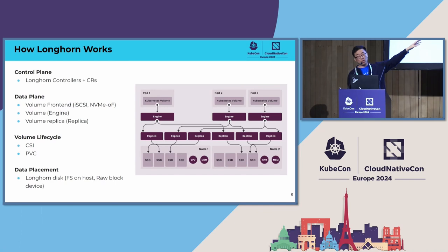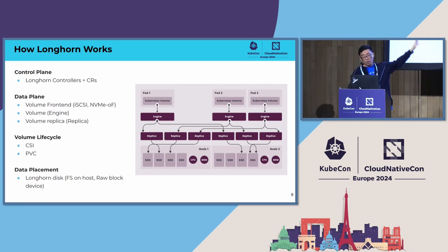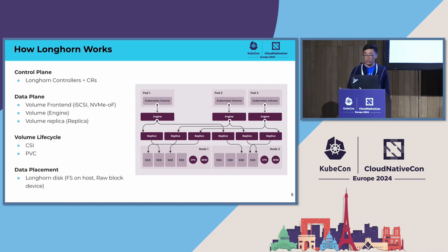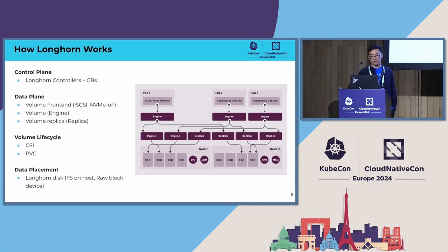If your workload is a managed workload — for example a Deployment or StatefulSet — and it fails over, in a short time when your workload comes up on another node, Longhorn will bring up the volume quickly because the replicas are intact. It brings up the iSCSI front end and engine process in very short time. This is basically how Longhorn works.